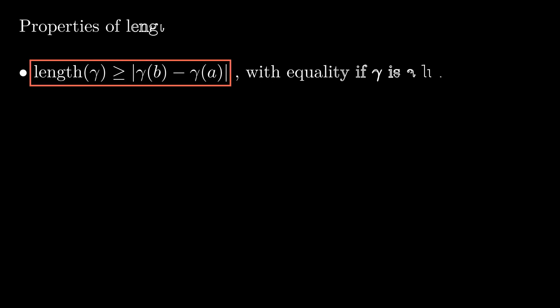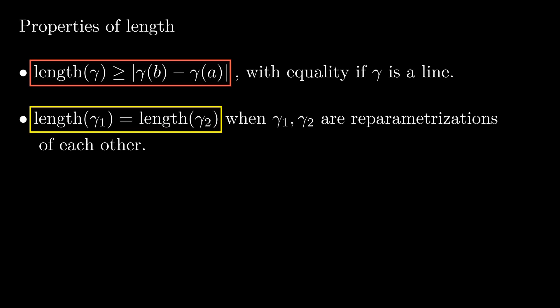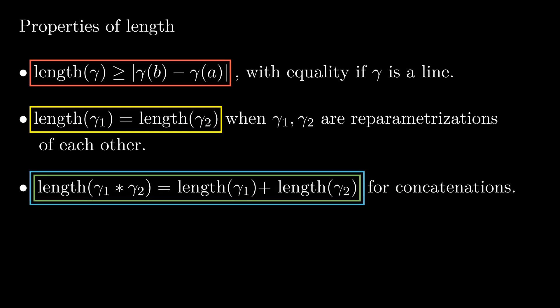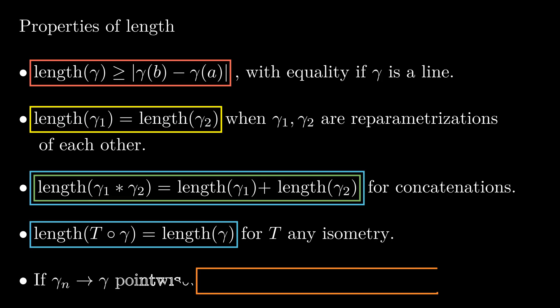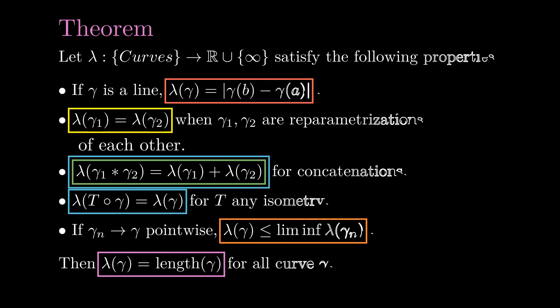Let's recall all the properties we have so far. The length of a curve is at least the distance between its endpoints, with equality only if the curve is a line. The length of a curve is invariant under reparametrizations, the length of a concatenation is the sum of the lengths, the length is invariant under the isometries of the plane, and if we have a sequence of curves that converges pointwise to another curve, the length of the limit curve will be at most the limit of the lengths of the curves of the sequence. It turns out that any other property will follow from these 5. This is because the length is the only functional satisfying these properties. In other words, we have this theorem.